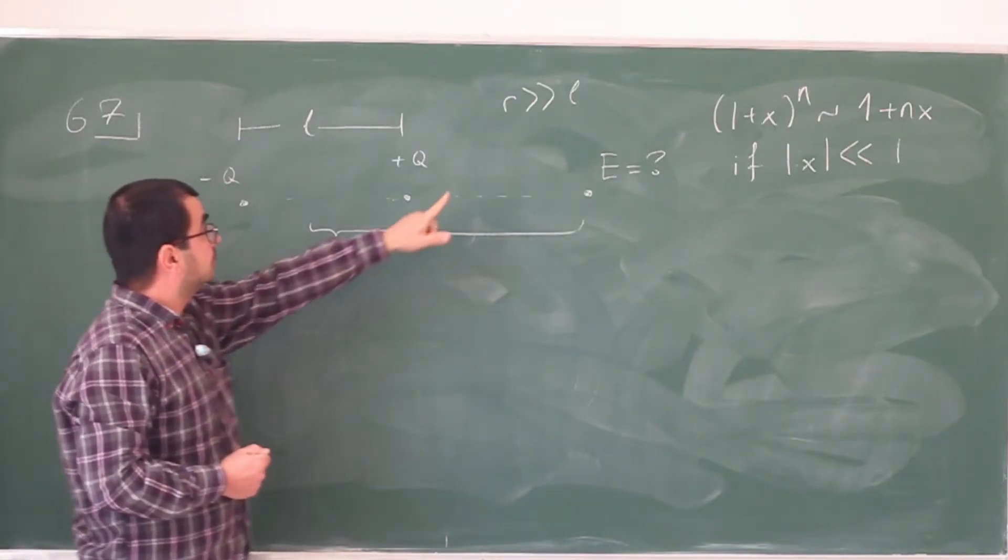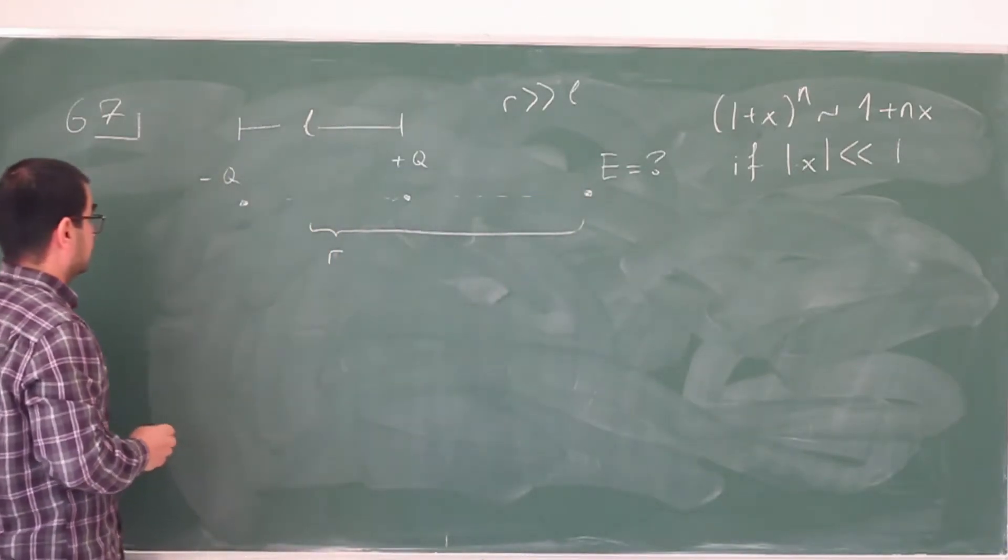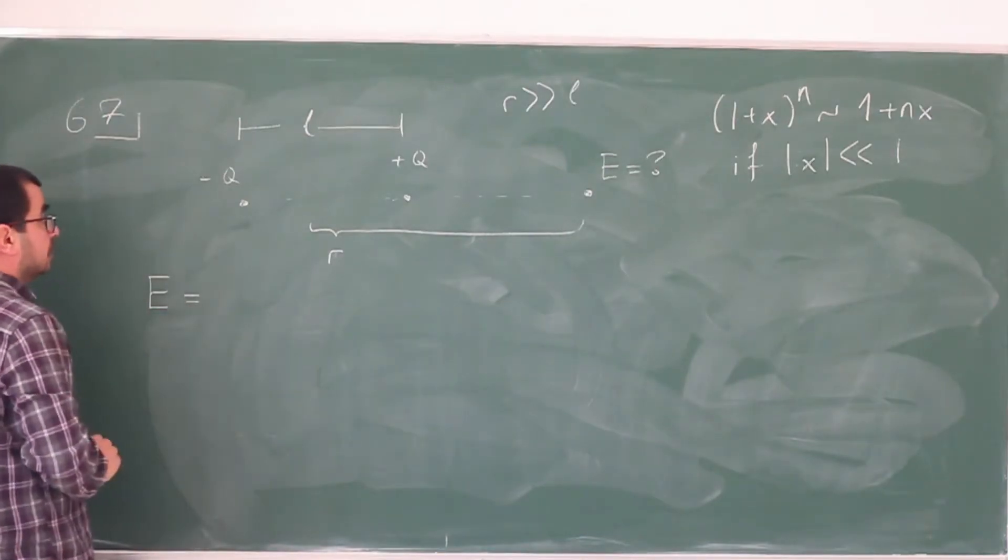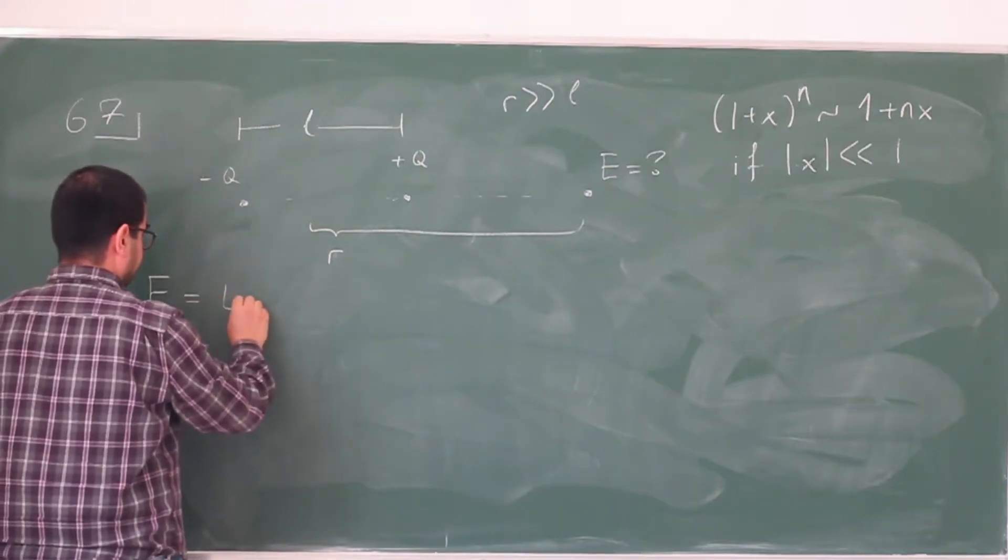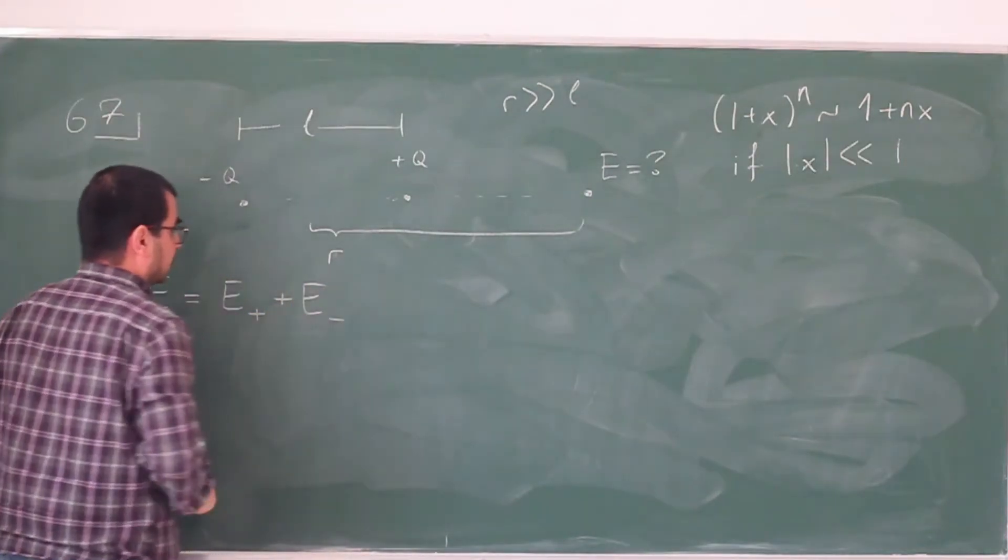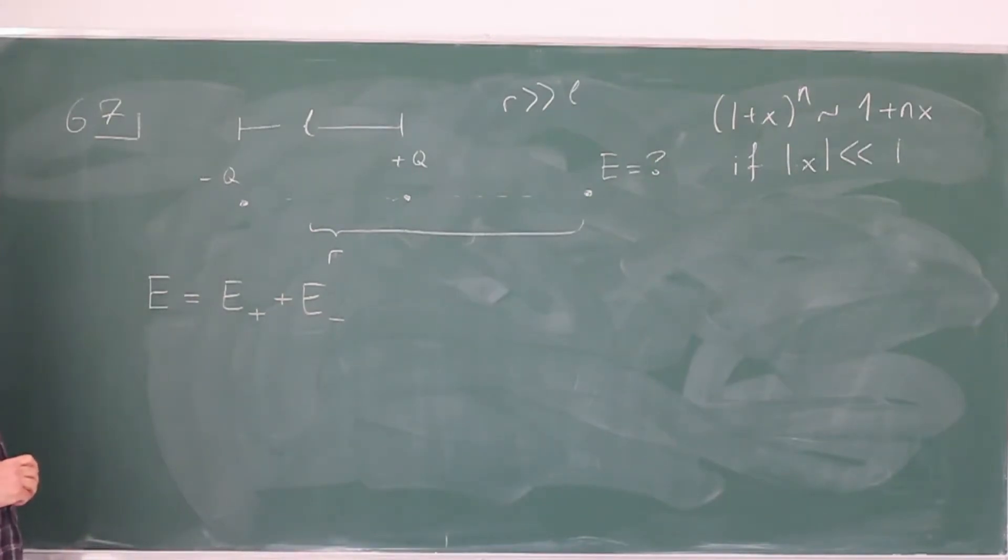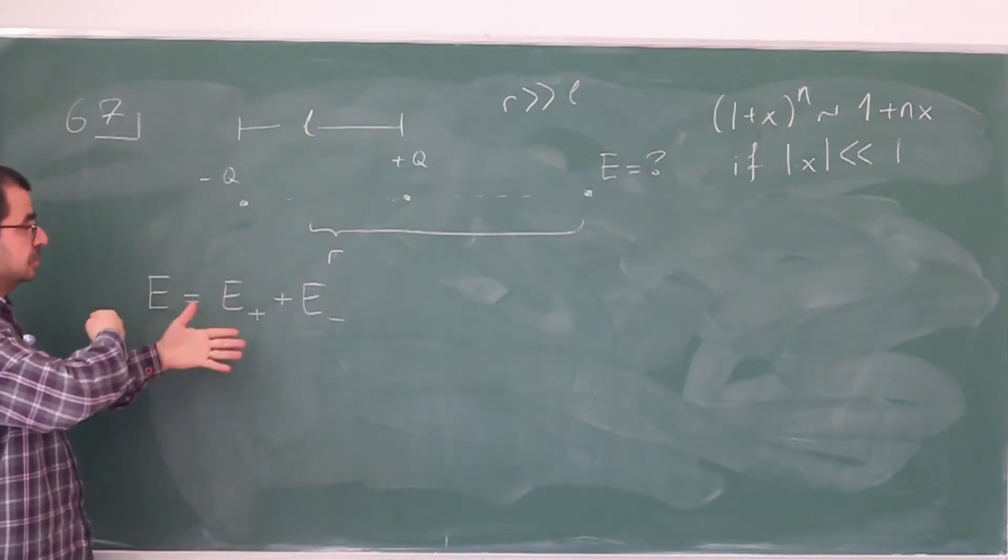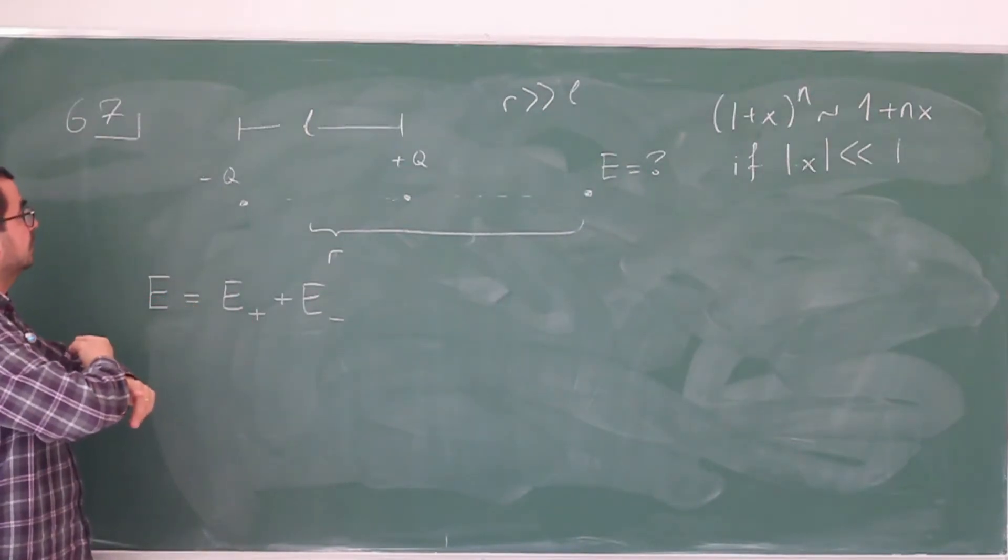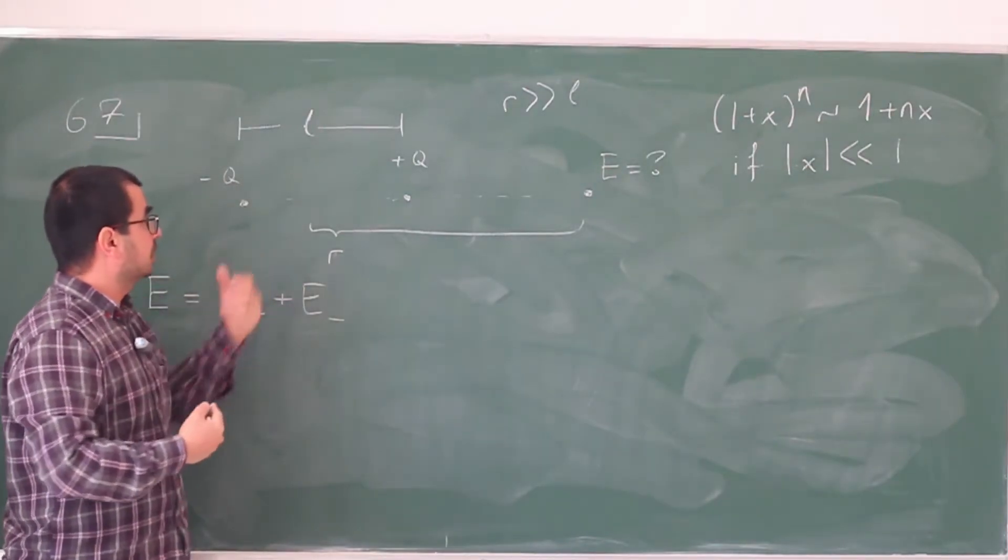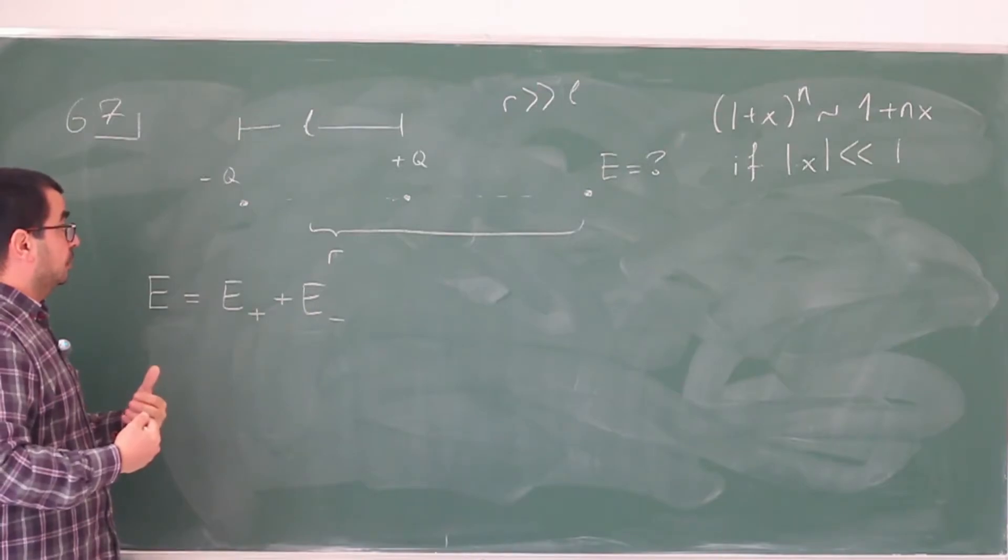So let's write down the electric field at this point. The electric field, the magnitude, is going to be the magnitude of the electric field that's coming from the plus charge plus the electric field magnitude coming from the minus charge. So these are going to be anti-parallel to each other, so they are along the same line. So I can just use the magnitudes, I don't need to do an explicit vector sum, but I have to be careful. They are in the opposite direction, so the magnitudes are actually going to be subtracted off from each other, not just added.